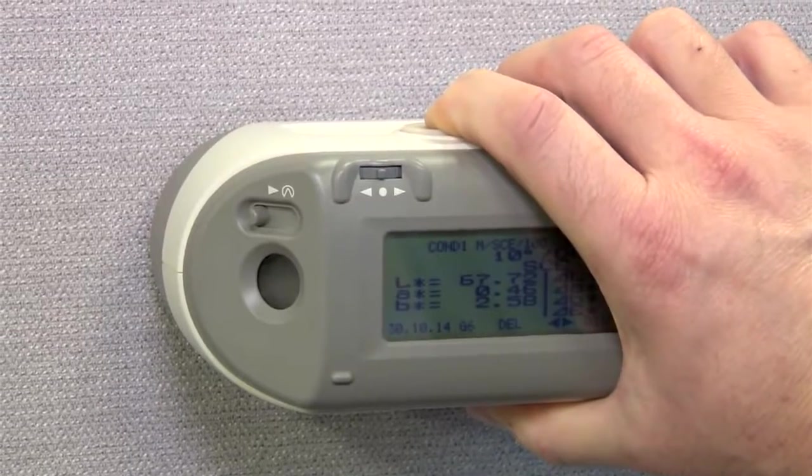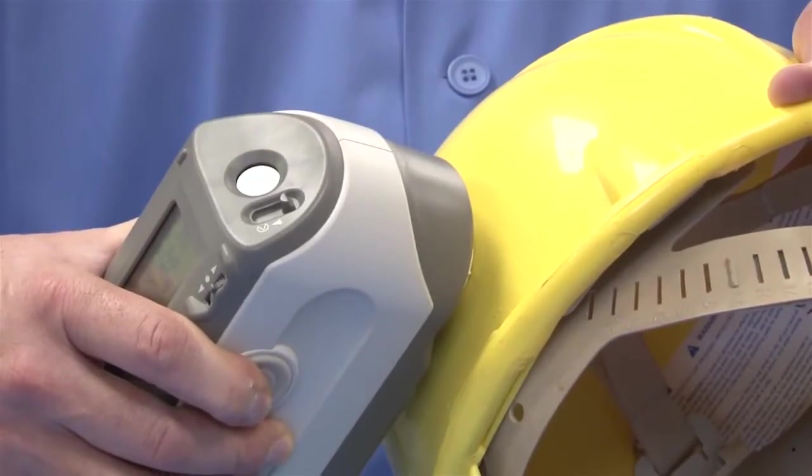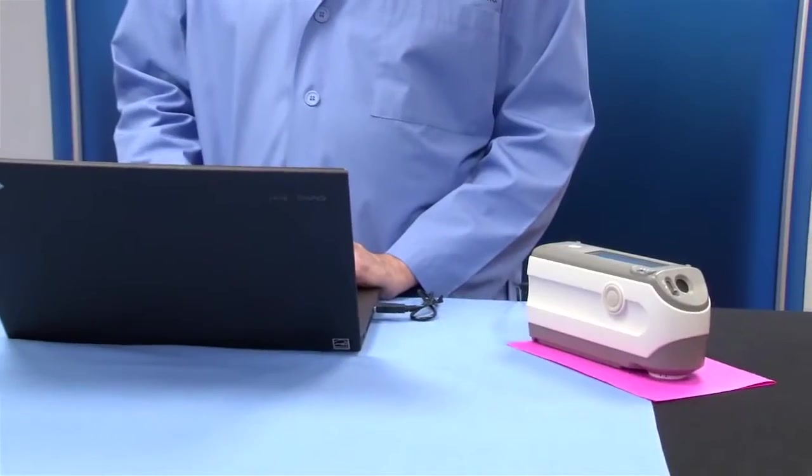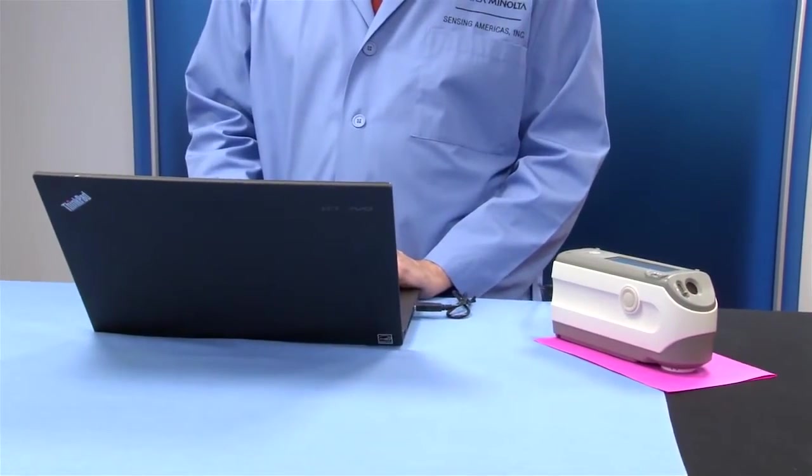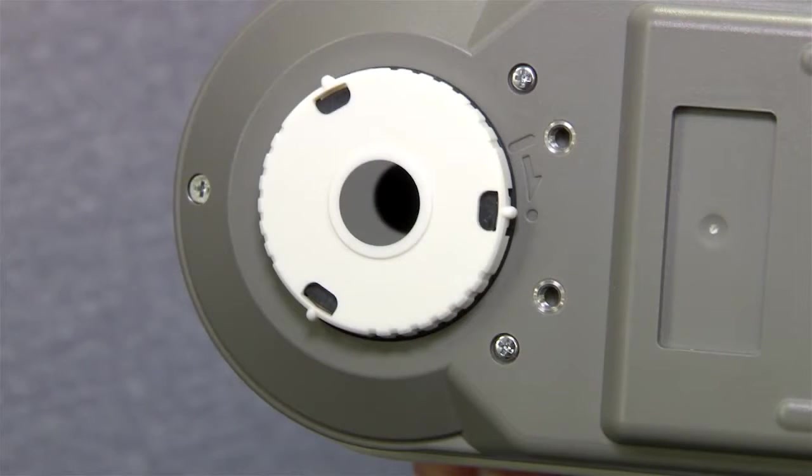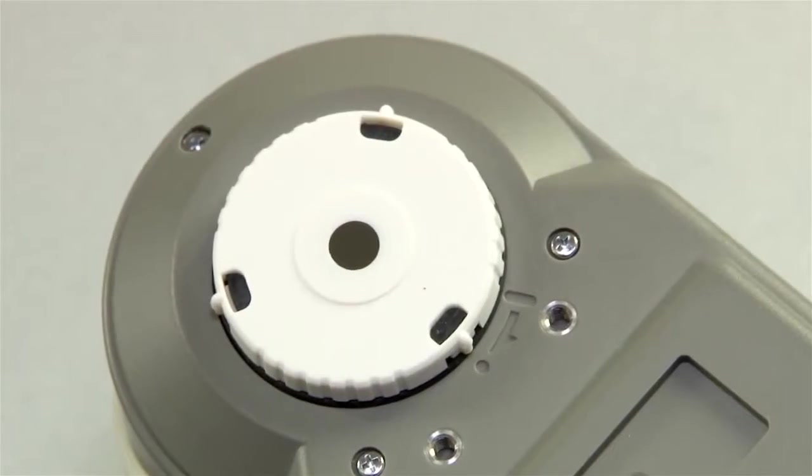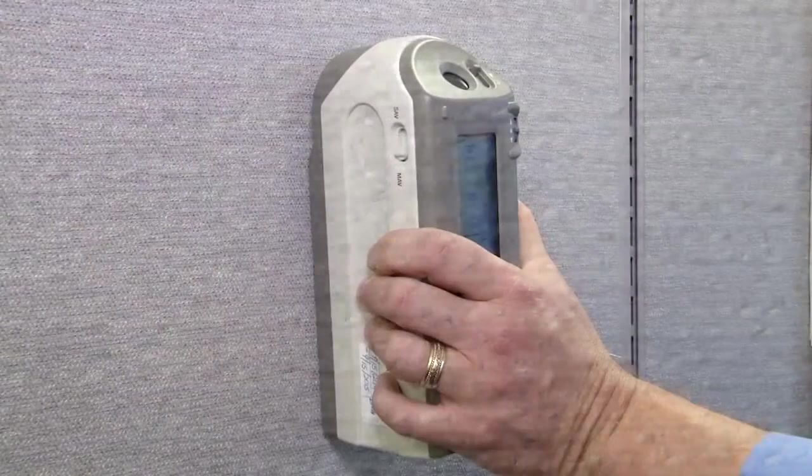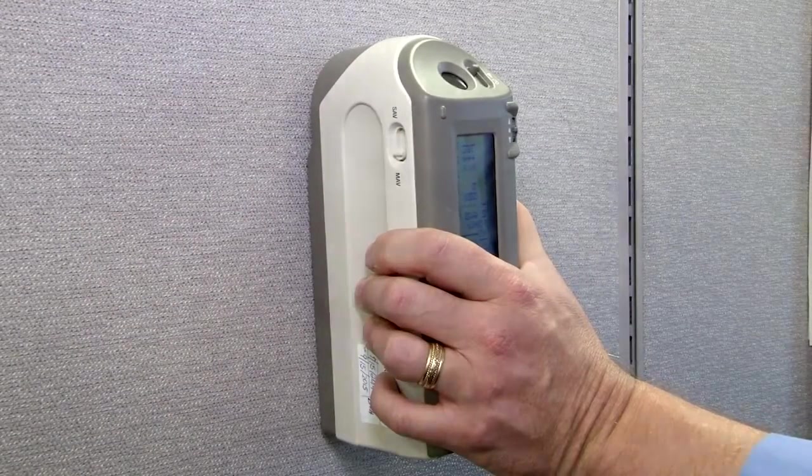The CM-2600D is the instrument of choice when measuring textured, curved, matte and glossy surfaces, light to dark, and color including UV characteristics. Two interchangeable 8 millimeter and 3 millimeter apertures enable the measurement of samples small to large in size, avoiding time-consuming average measurements on structured surfaces or faulty results on small samples.